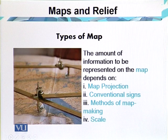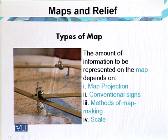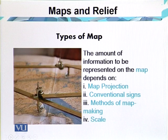The method of map making is very important when dealing with techniques. Some maps are prepared with the help of a computer, some with the help of aerial photographs, and some maps are prepared with the help of sketching. These are the methods used for map making. The last essential component for map making is the scale. Every scale gives us the shape of the map.